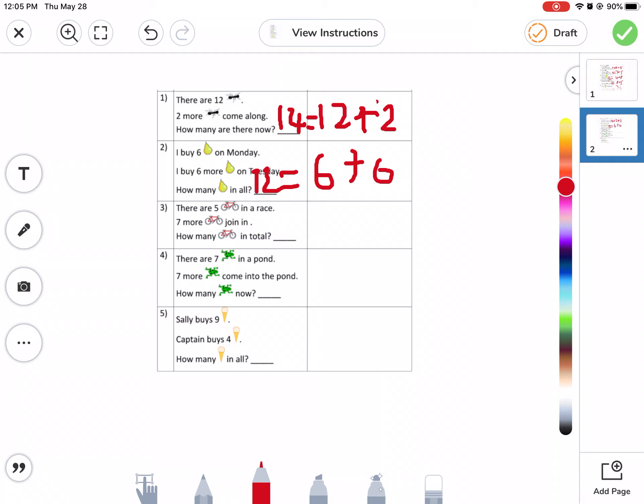I know, I know. Okay, it's fine. There are five best calls in a race. Seven more going in. How many in total? Okay.